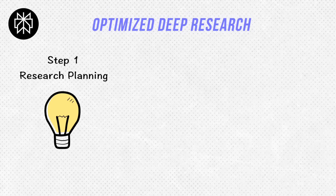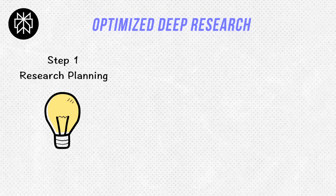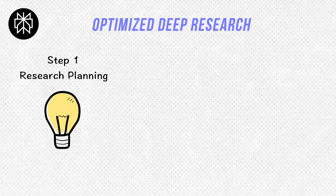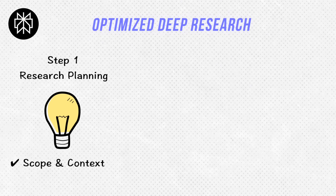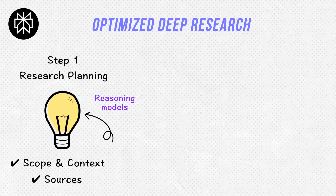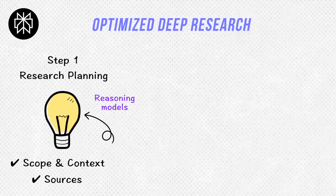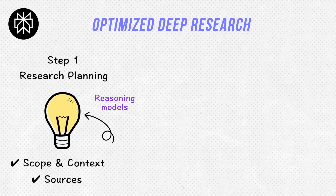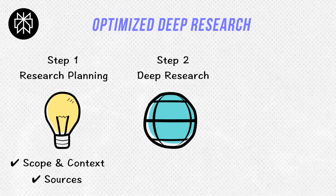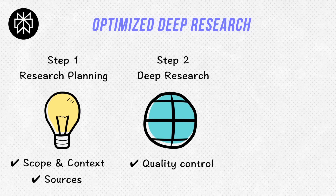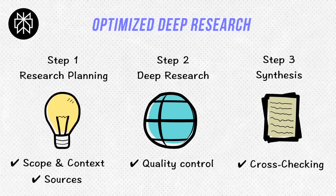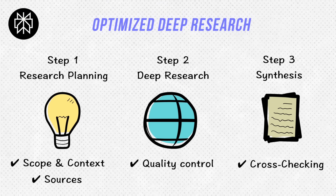First, we'll start with the research planning process. Unlike OpenAI or Gemini deep research, which always propose a research plan first, Perplexity doesn't have this feature built in. So we'll do proper planning with a well-defined scope and sources to include, to maximize the final output quality. We'll primarily use a reasoning model for this step — make sure you give as much context as you can to best utilize the reasoning power. Then comes the actual deep research process, based on the research plan and criteria to avoid bias. And finally, the synthesis stage that combines all findings and cross-checks by searching for specific evidence.